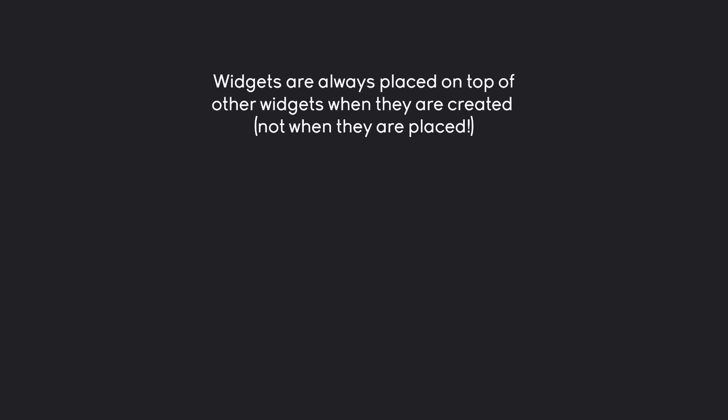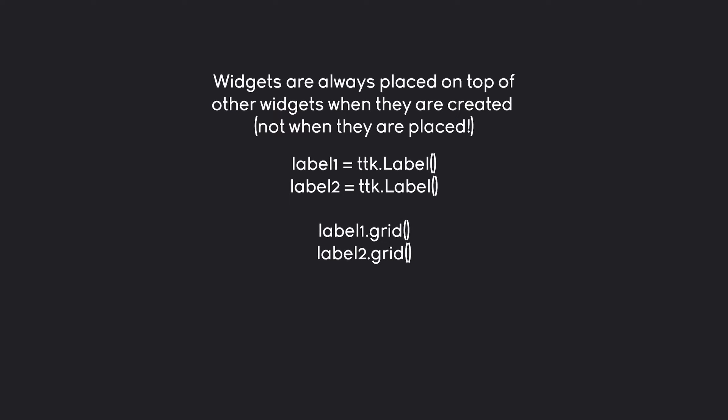The most basic thing you have to understand is that widgets are always placed on top of other widgets when they are created — not when they are placed. For example, we have two labels, both are TTKLabel. We're using the grid method to place them, but just imagine they are on top of each other. In this case, label 2 is going to be on top, because we are creating label 2 after label 1. If we switch this around, label 1 would be on top. The grid method itself doesn't have any influence on that.